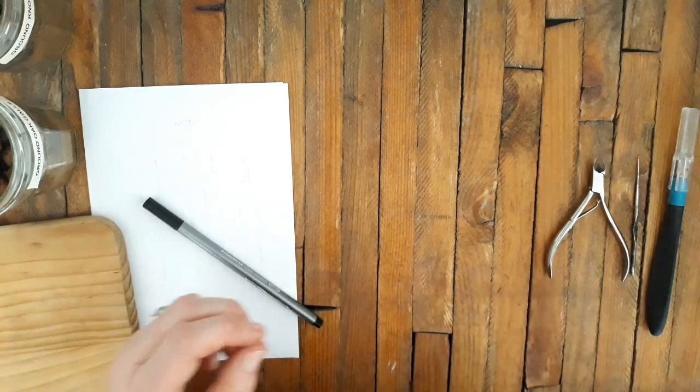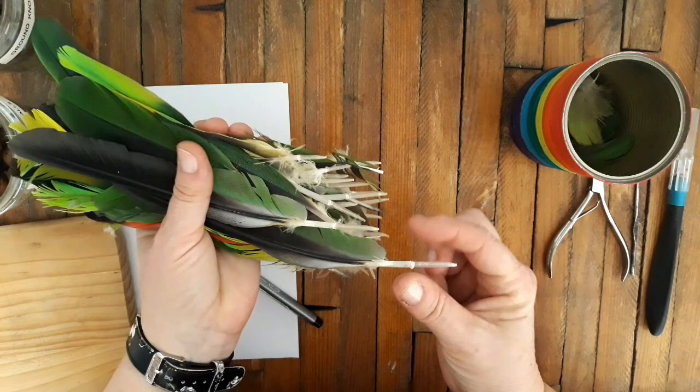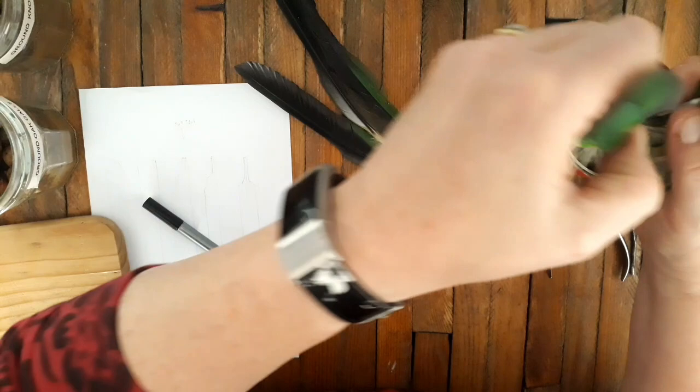What I've got here are some feathers that have been willingly given to me by my pet parrot, and what I'm going to do is select the ones with the thickest tips. The best feathers to use are goose feathers or swan feathers. If you've got swans near you, have a walk around and see if they've given up their feathers willingly.